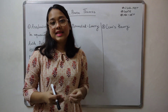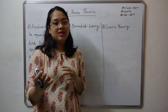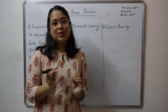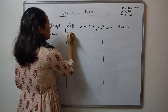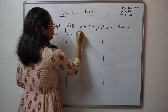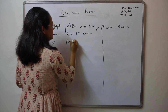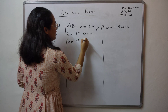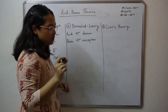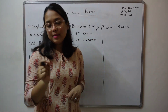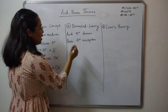The Bronsted-Lowry theory says that an acid is going to be a proton donor and a base is going to be a proton acceptor. So the definitions are: an acid is said to be a proton donor, and a base is said to be a proton acceptor. We will take a simple example with respect to an acid.